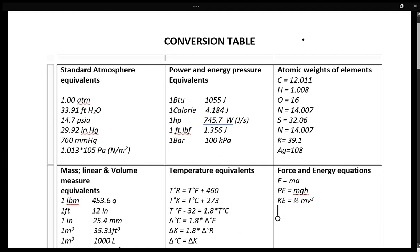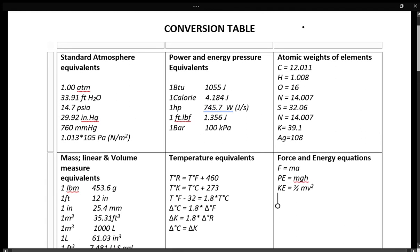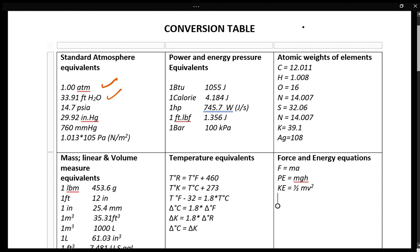In front of me you can see I've got different quadrants. The first quadrant is standard atmospheric pressure. Under this section you have pressure in atmospheres, pressure in feet of water, and pressure in psia — which stands for pounds per square inch absolute. You also have standard pressure represented in inches of mercury, millimeters of mercury, and the last one is Pascal.